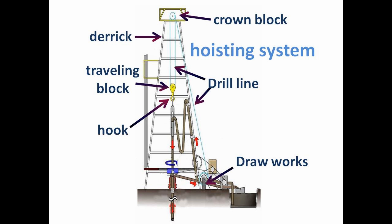In the hoisting system, you find the derrick, the drill line, the drawworks, the crown and traveling blocks, and the drilling hook.